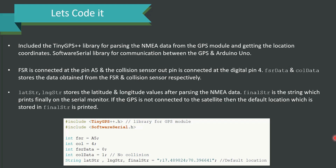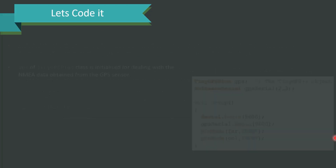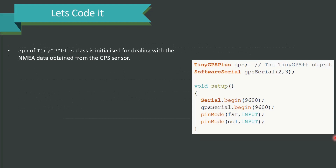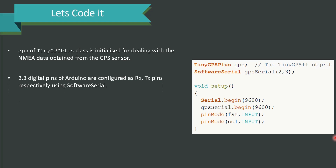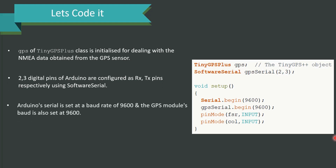The final_str is the string which prints on the serial monitor. If the GPS is not connected to a satellite, a default location stored in final_str will be printed. You can go through the code snippet for enhanced understanding — it is very easy to follow. A TinyGPS Plus class is initialized for dealing with the NMEA data from the GPS sensor, and digital pins 2 and 3 of the Arduino are configured as RX and TX pins respectively using SoftwareSerial.